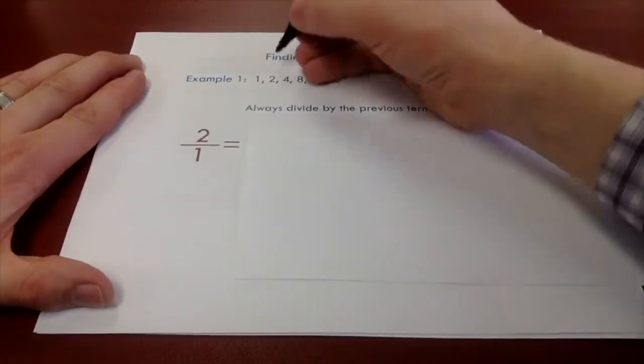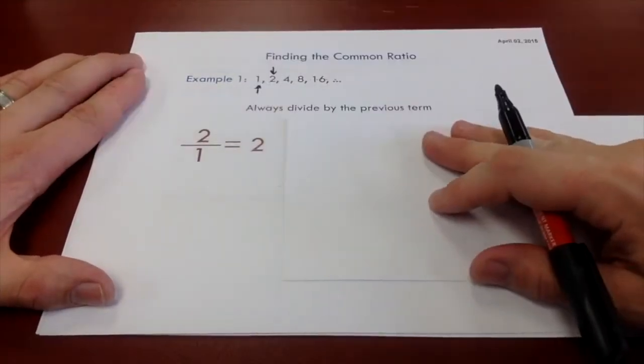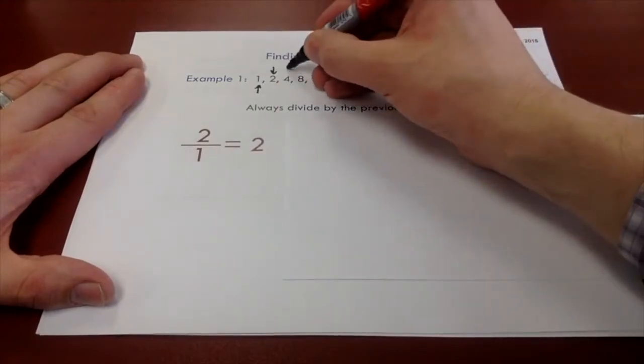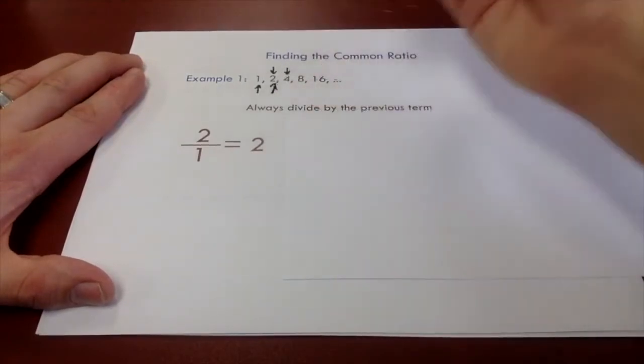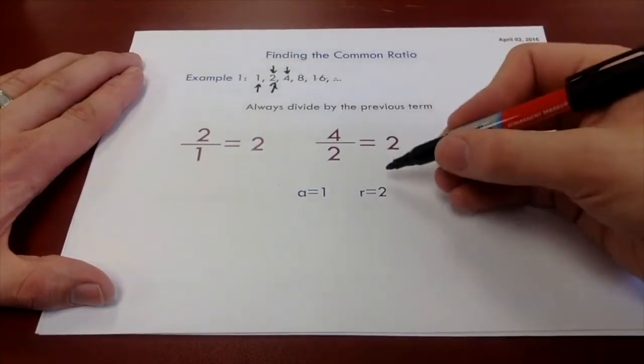Let's look at two and one. So we're going to start with two and we're going to divide by the previous term. Two divided by one is two. We can continue that going through our sequence. If we take four and we divide it by two, we get two and so on. So we're able to tell that our common ratio is two.